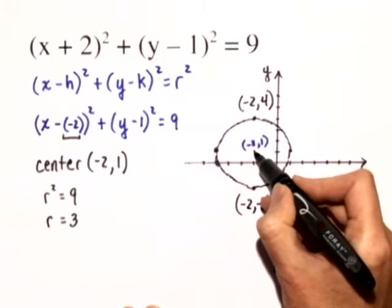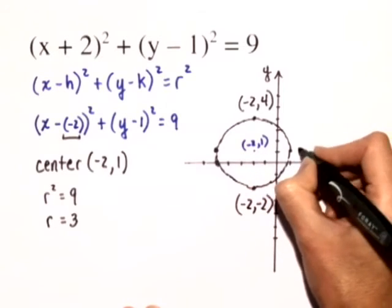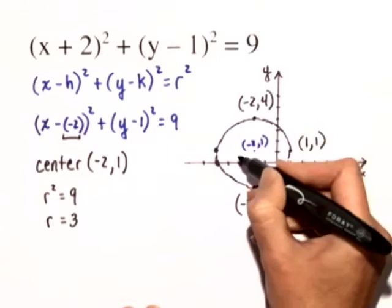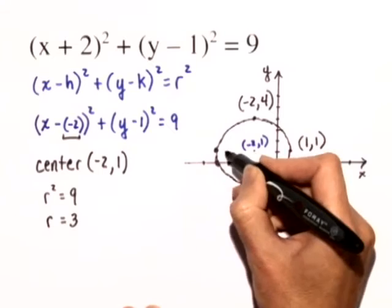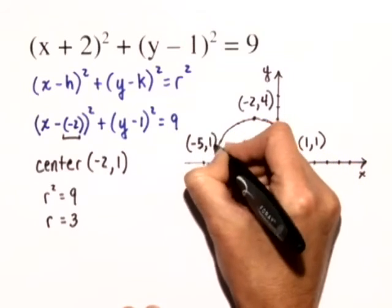Now going back to the center of the circle, negative 2, 1. When I went to the right 3 units, I really ended at 1, 1. And when I went to the left 3 units, I ended over here at negative 5, 1.